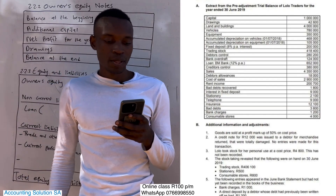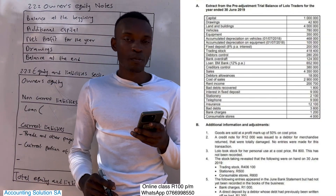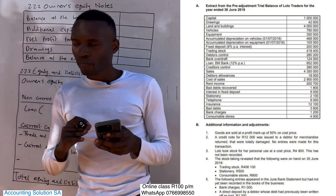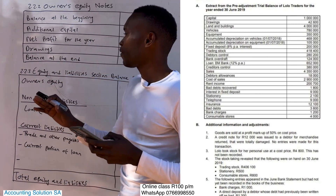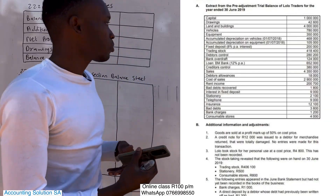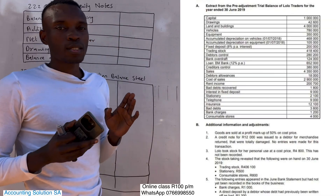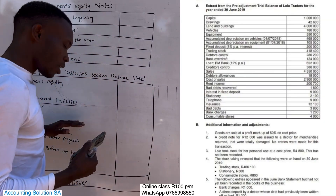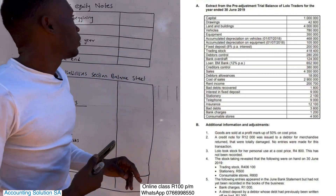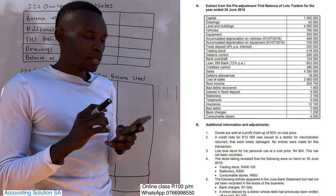They give us a pre-adjustment trial balance from capital, but we are not going to use the entire information. Now let's check the first part that we are going to prepare. They ask us to start with the balance at the beginning. Make sure that you know this format, because this format is a must for you to know it, so that when you answer the question it's going to be simple — just lay down the format and then from there you just read the information.